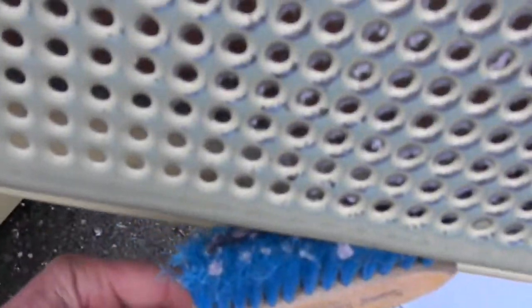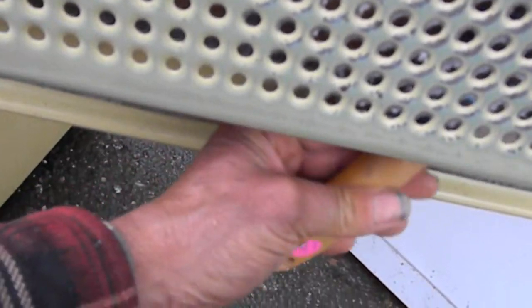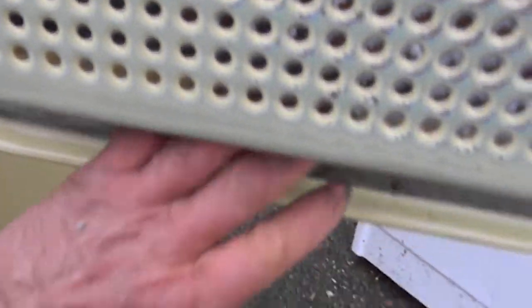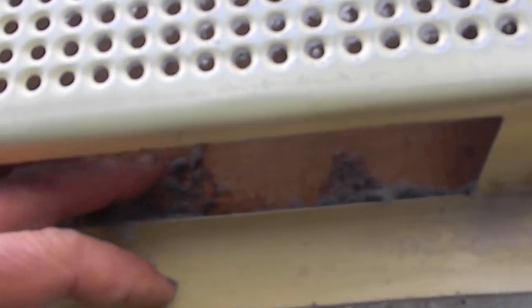You just want to take your brush and clean it out underneath there. Be careful so that you don't affect any of the padding or the insulation on the other side of this panel, attached to the outside of the panel. So I'm going to check that.